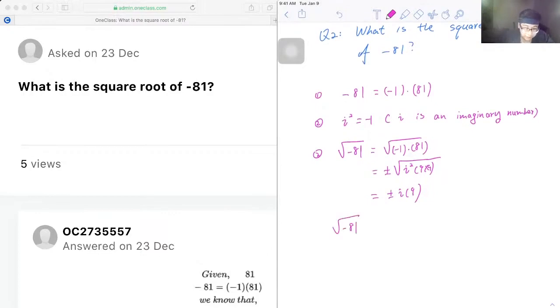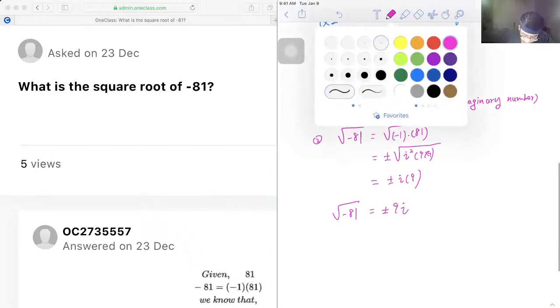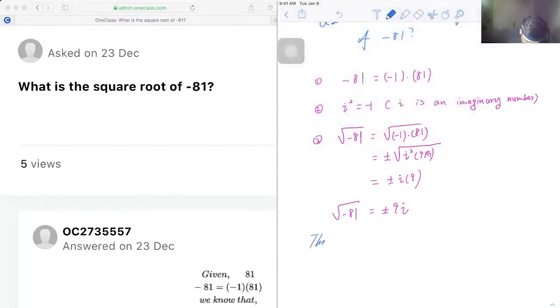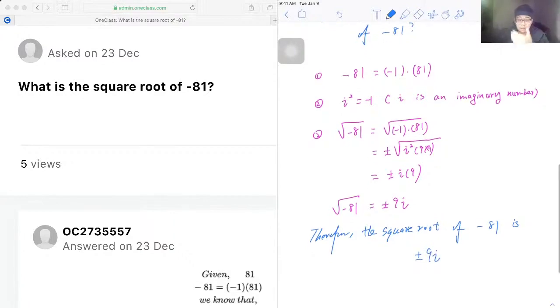The square root of negative 81 is equal to positive and negative 9i. And now we can write our conclusion: therefore, the square root of negative 81 is plus or minus 9i. Okay, so that's what we have for this question.